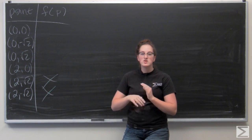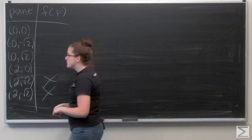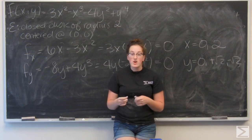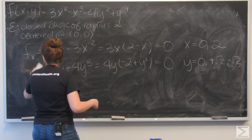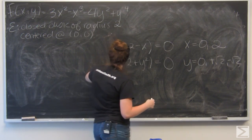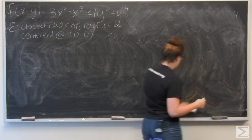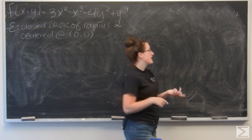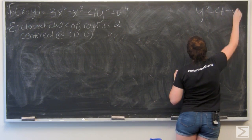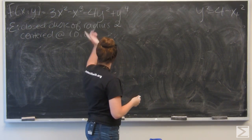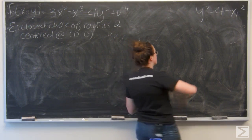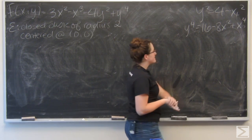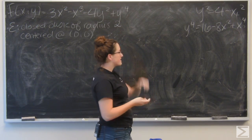I've checked the inside of the circle. Now I want to make sure there aren't any more points on the boundary I need to check. I'll write a function for f along the boundary in terms of one variable, calling it g. The boundary is defined where x squared plus y squared equals 4. Solving for y squared gives 4 minus x squared. I can plug that into f for y squared, and for y to the fourth I square that quantity, getting 16 minus 8x squared plus x to the fourth.